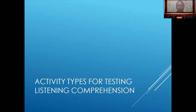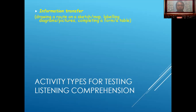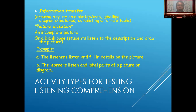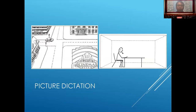Activity types for testing listening comprehension include: information transfer, drawing on a sketch or map, labeling diagrams and pictures, and completing a table. Picture dictation: on a blank page, students listen to the description and draw the picture. Learners listen and then label parts of the picture or diagram.